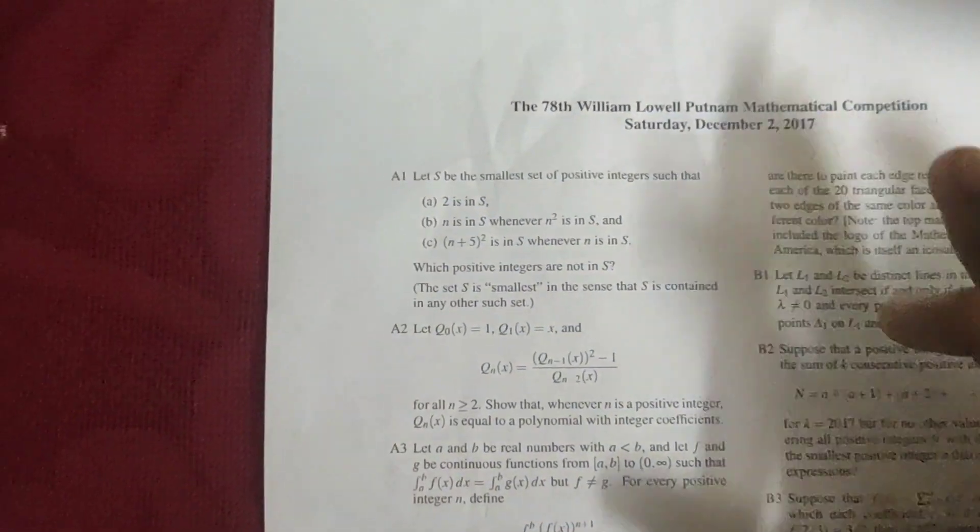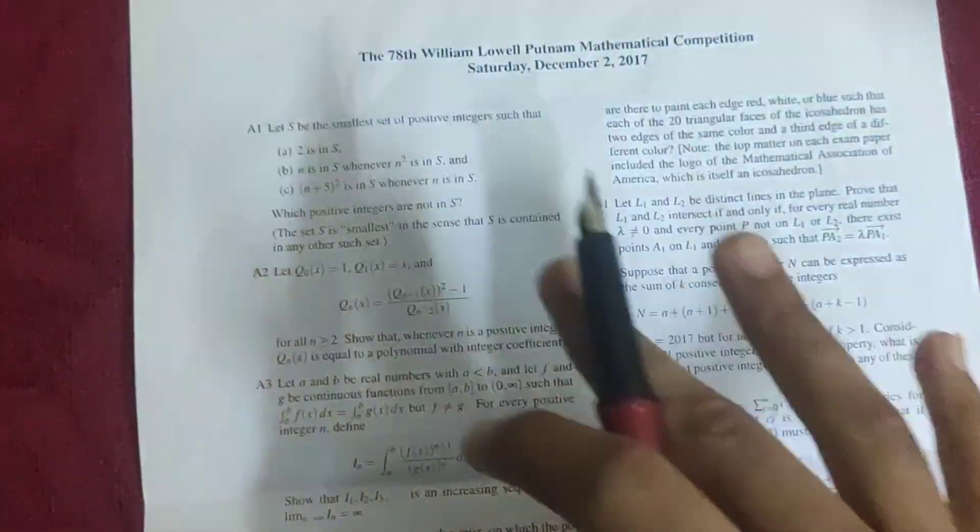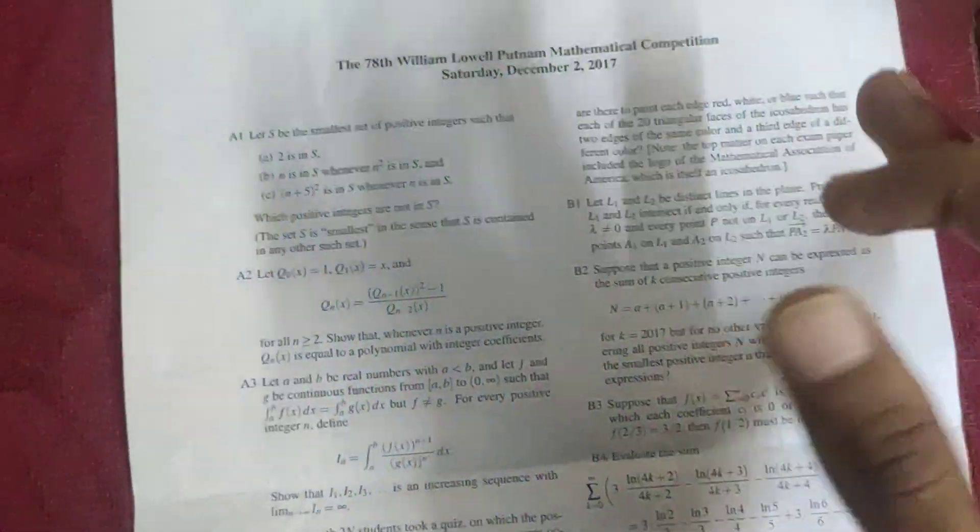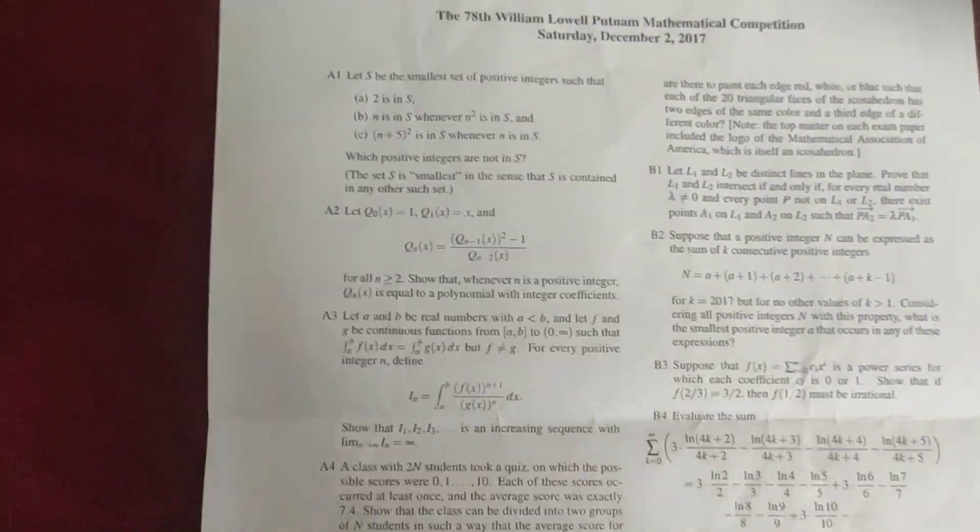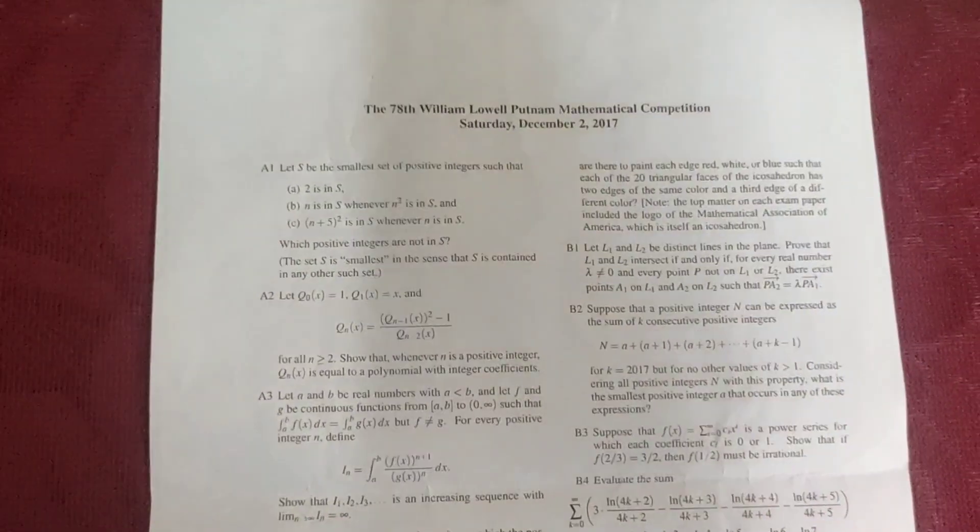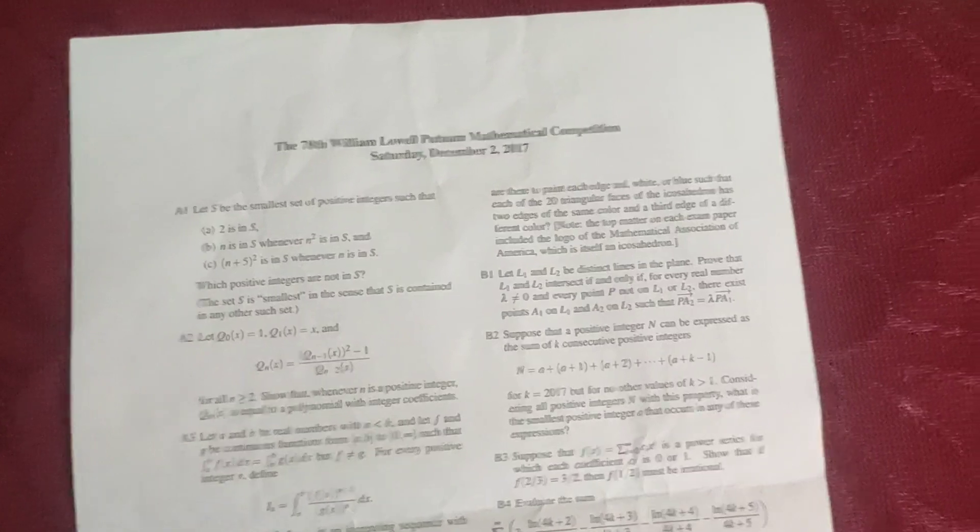I will give the question paper link in the description box and also the solution link in the description box. The entire exam, if you want to see the entire exam, I will give you the link. The entire exam, the median score, the 120 points, usually they will be getting 0 to 1. Think that if you get about 2 or even 2, you should think that you should be proud of yourself and you should think that you are about the median score.